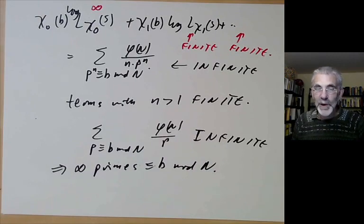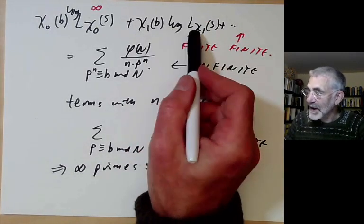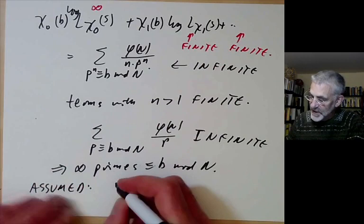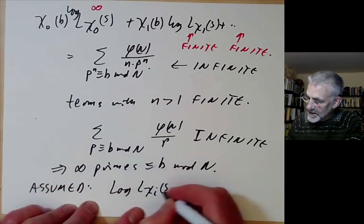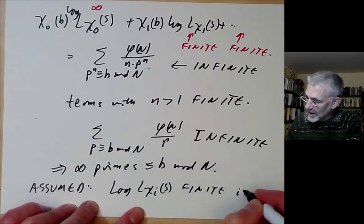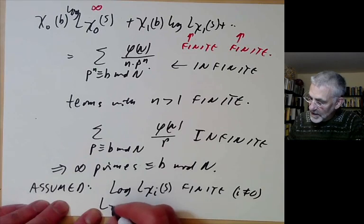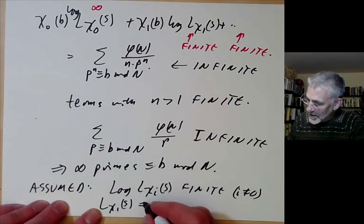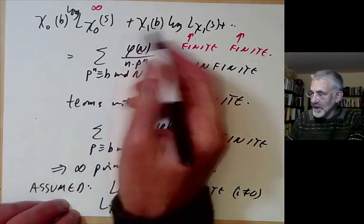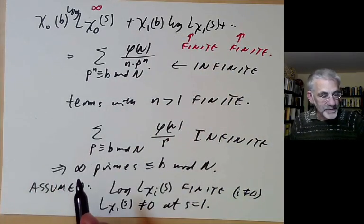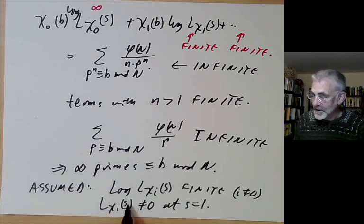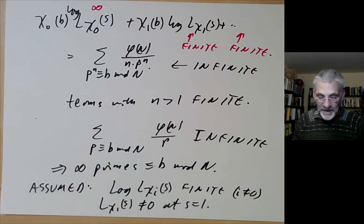There is one slight problem we haven't dealt with: we assumed that log L(chi_i, 1) is finite for all non-principal characters chi_i, i.e., that L(chi_i, 1) ≠ 0 at s = 1. So what we're going to prove next lecture is that the Dirichlet L-series of non-principal characters don't vanish at s = 1. This will complete the proof of Dirichlet's theorem.